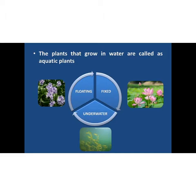There are mainly three types of aquatic plants: floating plants, fixed plants, and underwater plants. Now, let's study about them.